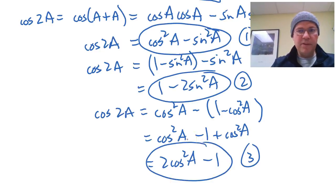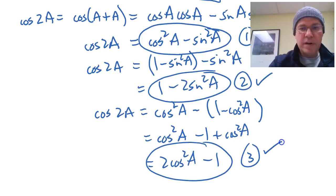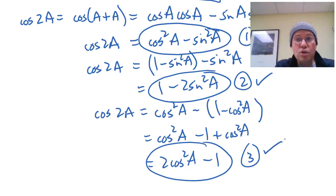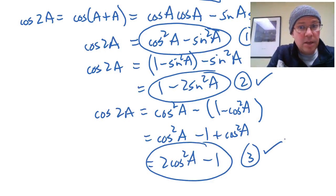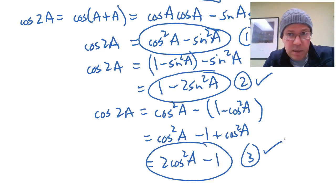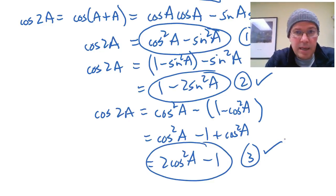Now in actual fact, number 2 and 3 are actually often more useful in calculus certainly than number 1. Number 1 can be useful when you're proving trig identities and other things, but if you want to integrate sin squared A, you can rewrite it as cos 2A using this formula here, and then you can integrate sin squared A.